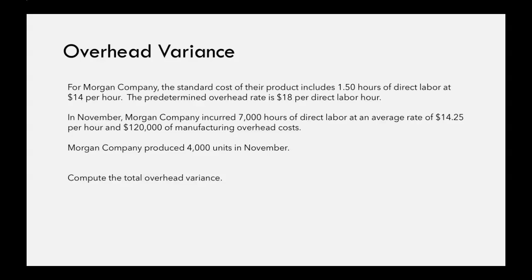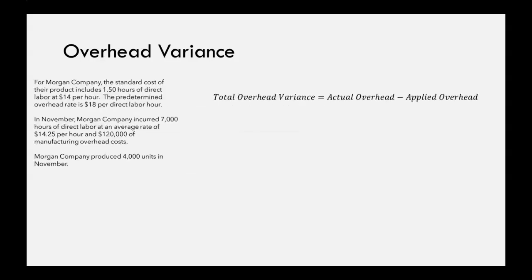We are given all of the information that we need to be able to compute the total overhead variance. The formula for the total overhead variance is your actual overhead minus your applied overhead.